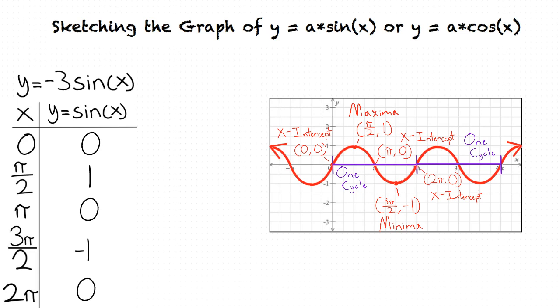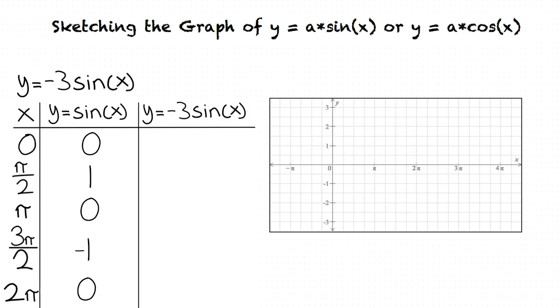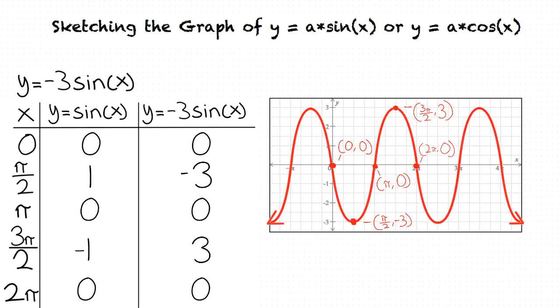Now that we have found the y values of our key points, we distribute the negative three into each of the y values, which results in the y values of zero, negative three, zero, three, and zero. We now plug the values into the graph, which results in our final answer.